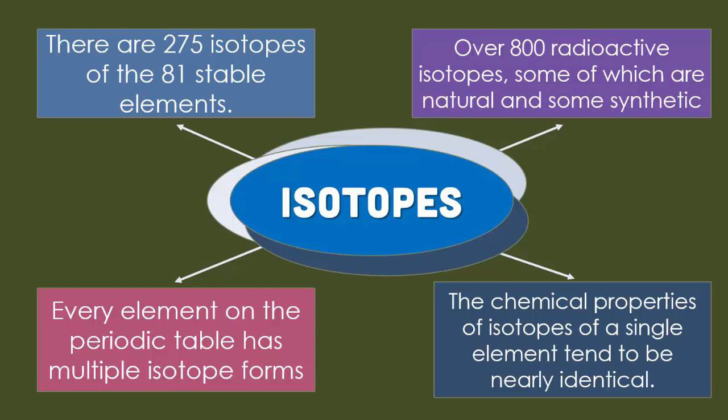The chemical properties of isotopes of a single element tend to be nearly identical. So iron, as you know, is magnetic, and all isotopes of iron are all magnetic.